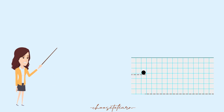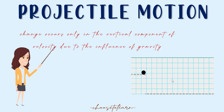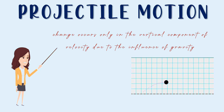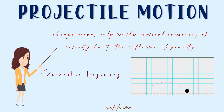Throughout the motion of the projectile, change occurs only in the vertical component of velocity due to the influence of gravity. The result of combined motions in the horizontal and vertical components is the parabolic trajectory. Therefore, two things are happening at the same time: the object continues to move horizontally, and the object falls, resulting in a parabolic trajectory.